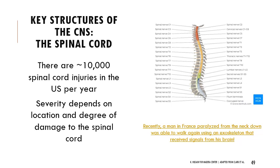In the U.S. there are about 10,000 spinal cord injuries every year. Depending on how badly you damage your spinal cord and where it's severed, you might have different degrees of paralysis. For example, if you sever the spinal cord around the lumbar region you might still have function of your arms but not your legs. If you sever it around the cervical region, you might not have function of your arms or legs - that's how we have different degrees of paralysis depending on where the spinal cord is injured.